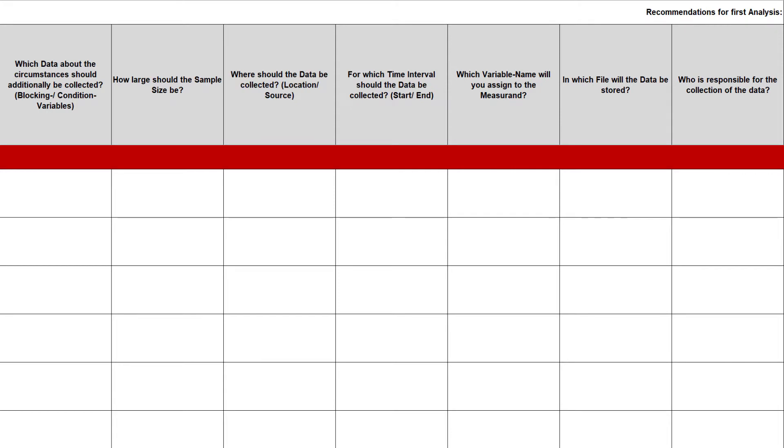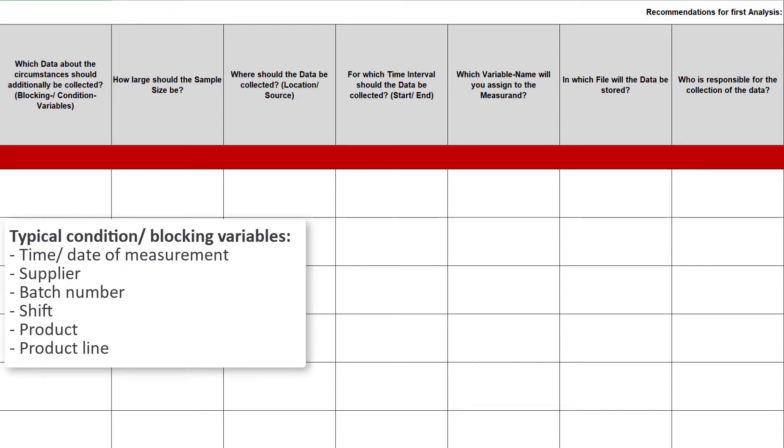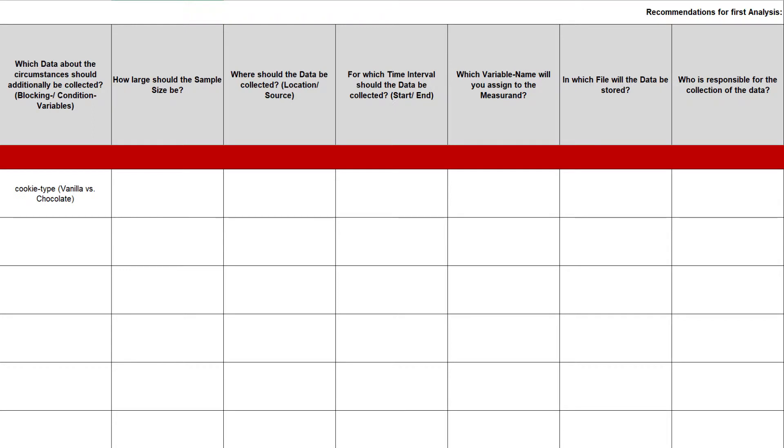The next questions relate to the context of the measurement. A good advice for a further differentiation, later in the statistical tests, is to add some blocking or condition variables about the circumstances of your measurement. Time and date of measurement, the supplier or batch number, the shift, the product, and product line are examples of condition variables. I for example choose cookie type as blocking variable. This means that we will measure the taste of vanilla and chocolate cookies, to be able to later differentiate the ratings between these cookie types.